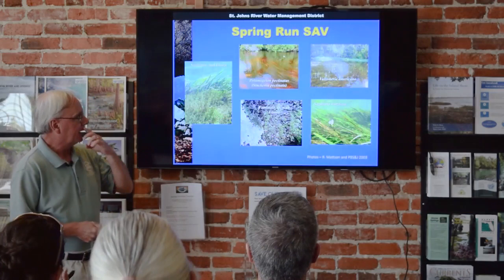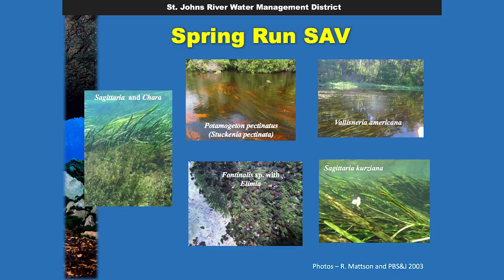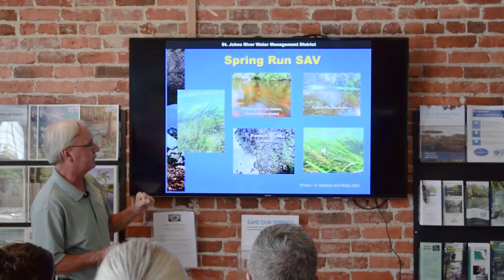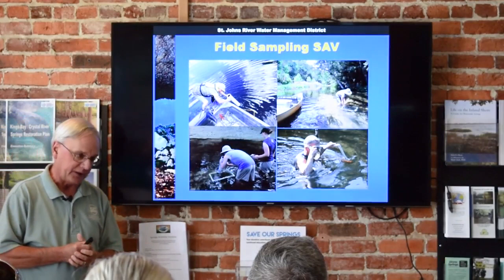Some examples — I've defaulted to scientific names here. Probably the two most common species are spring tape or strap-leaf sag, which is Sagittaria kurziana, and freshwater eelgrass or wild celery, which is Vallisneria americana. You can see they've got those strap-like leaf blades, which help them deal with the current in the spring run. Some of the other plants are Sago pondweed (Potamogeton), water moss with the snail Elimia, and Chara in the foreground, which is a green alga rather than a flowering plant.